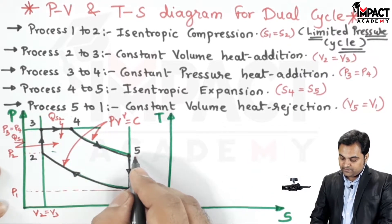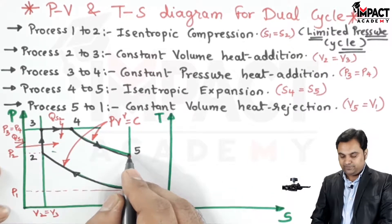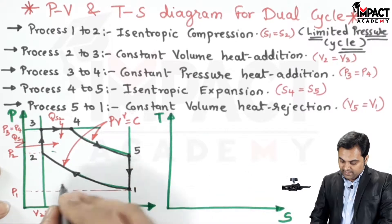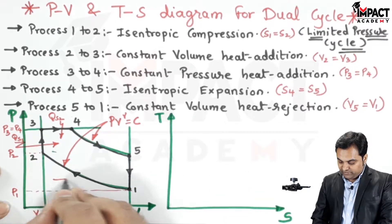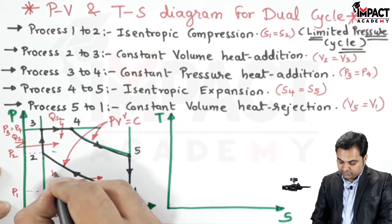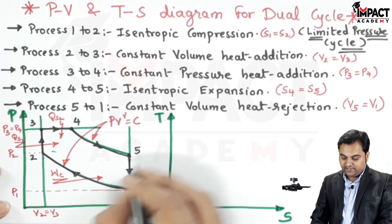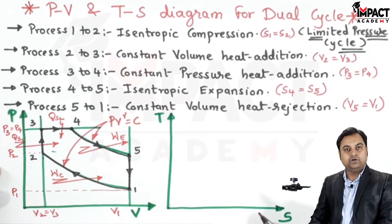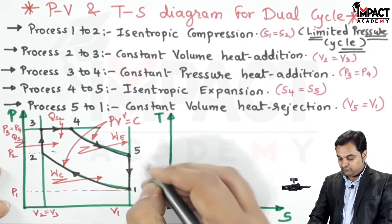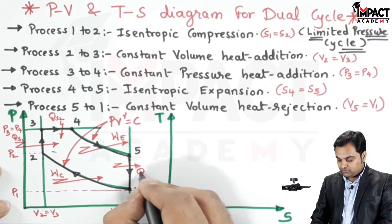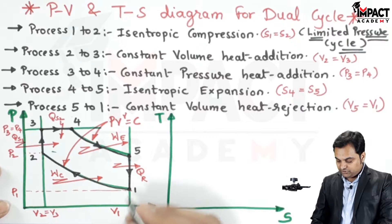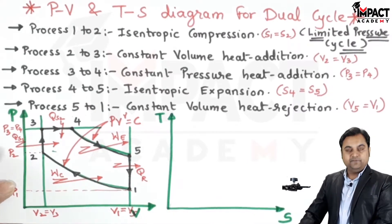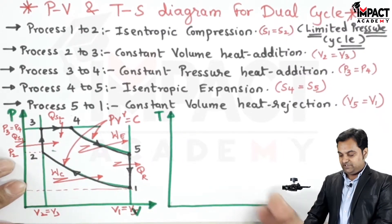Process four to five indicates the isentropic expansion, where the pressure drops from point four to point five. During one to two we are supplying the compression work, so the arrow goes inside. During four to five we are getting the work output — that is the expansion work. During process five to one, heat is rejected out of the system, denoted Q suffix r, and the volume remains constant: V1 is equal to V5. That was the PV diagram.